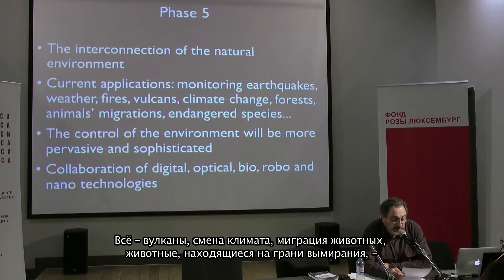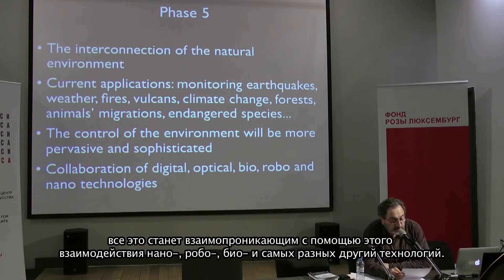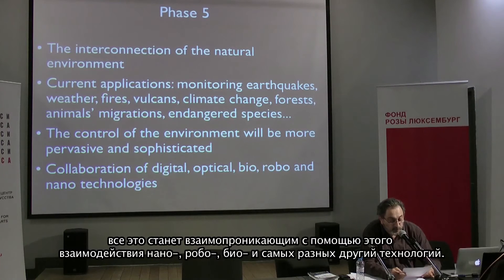Internet of Things will interconnect the artificial and natural environment, pervading them with data flows and making them intimately interrelated. There are already applications for monitoring earthquakes, weather, fires, volcanoes, climate change, forest animals, migrations, and dangerous species. The control of the environment will be increasingly pervasive and sophisticated through the collaboration of digital, optical, bio, robot, and nanotechnologies. Internet of Things will put in opposition the legitimacy of environment inspection with a privacy-safe world.